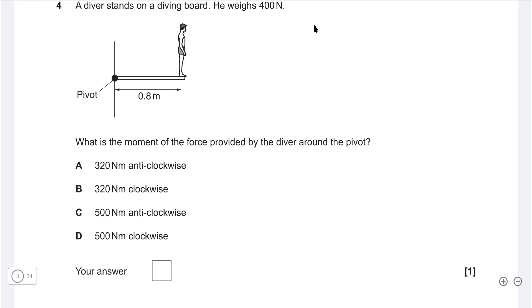Next one, a diver stands on a diving board. He weighs 400 newtons. What is the moment of the force provided by the diver around the pivot? Pretty similar to some of the previous ones. So the force is straight down. That's equal to the weight. In this case, we're just given the weight directly in newtons. And that's going to create a moment this way. So the whole board kind of wants to turn in this direction. This here is the clockwise direction.